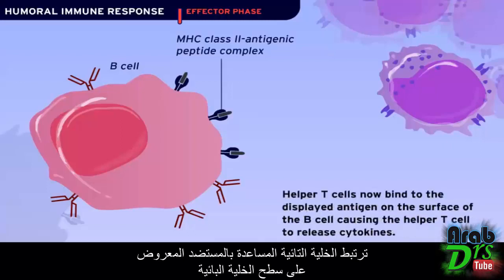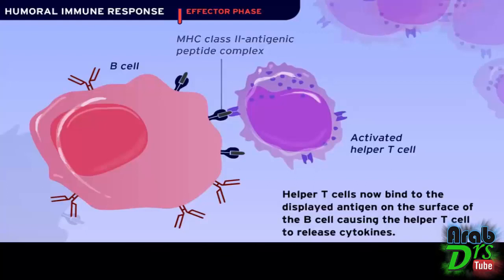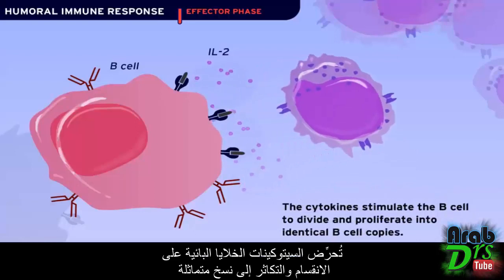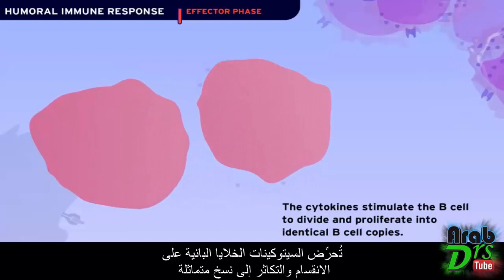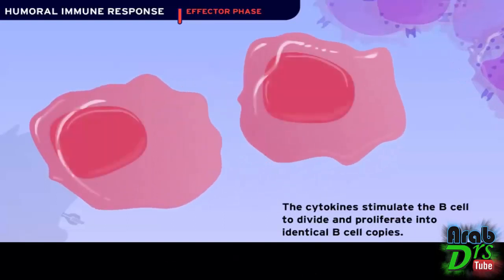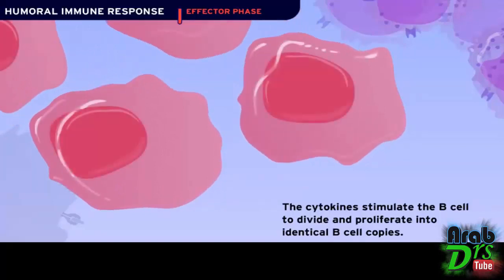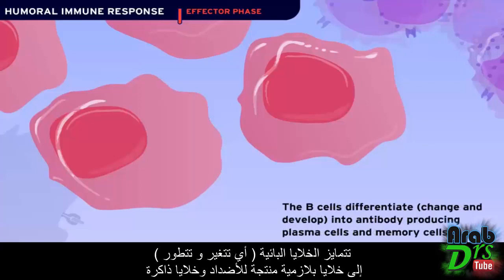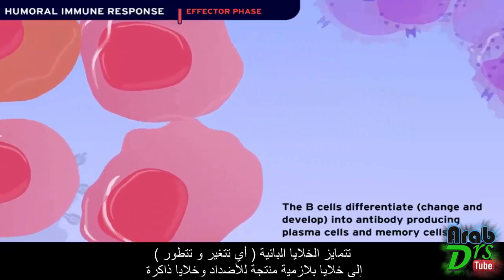Helper T cells now bind to the displayed antigen on the surface of the B cell, causing the helper T cell to release cytokines. The cytokines stimulate the B cell to divide and proliferate into identical B cell copies. The B cells then differentiate and develop into antibody-producing plasma cells and memory cells.